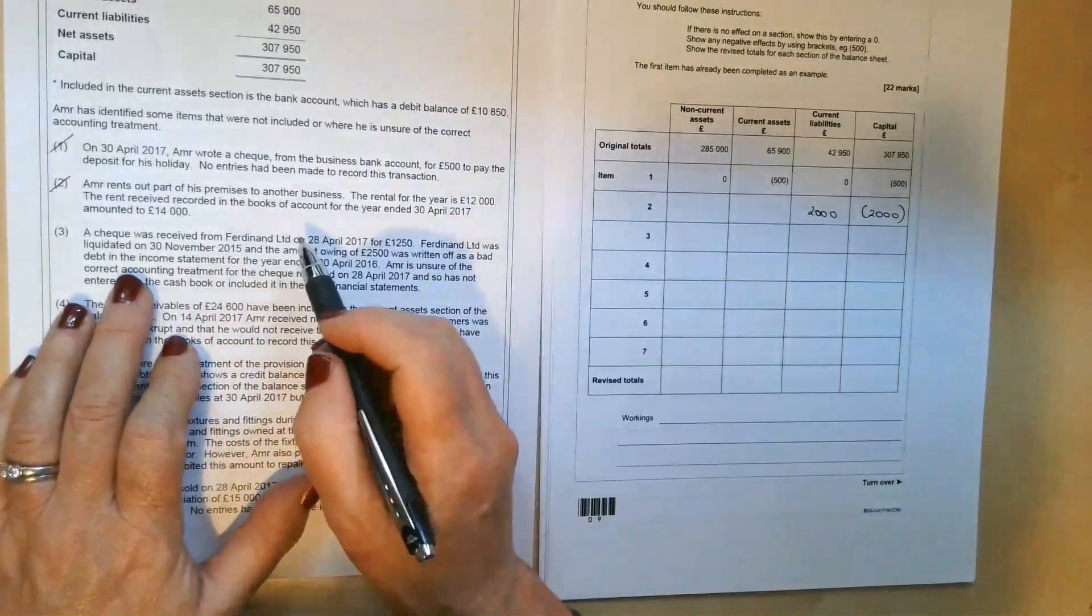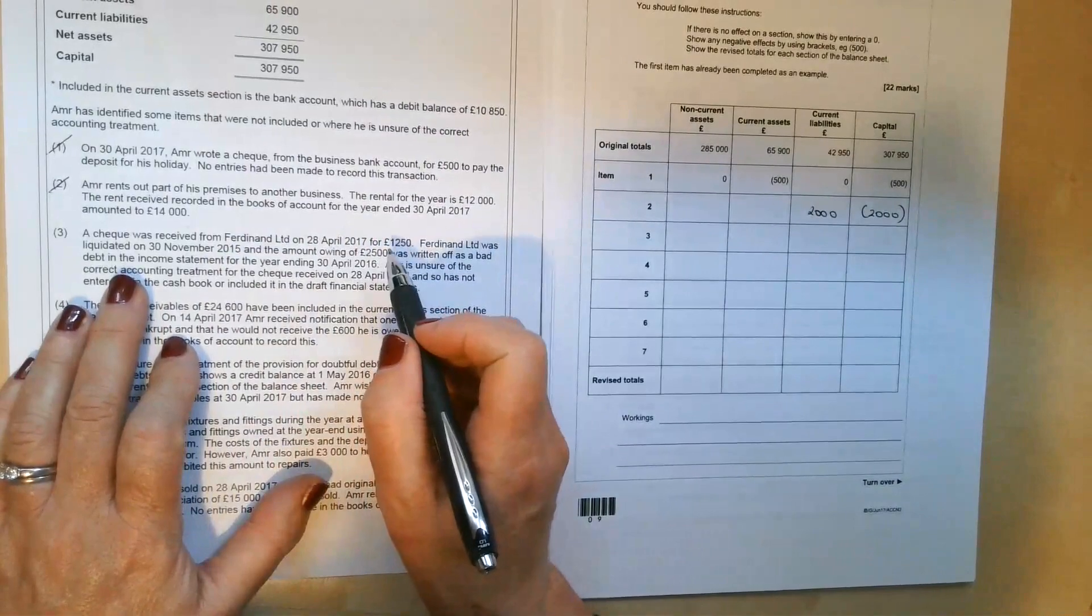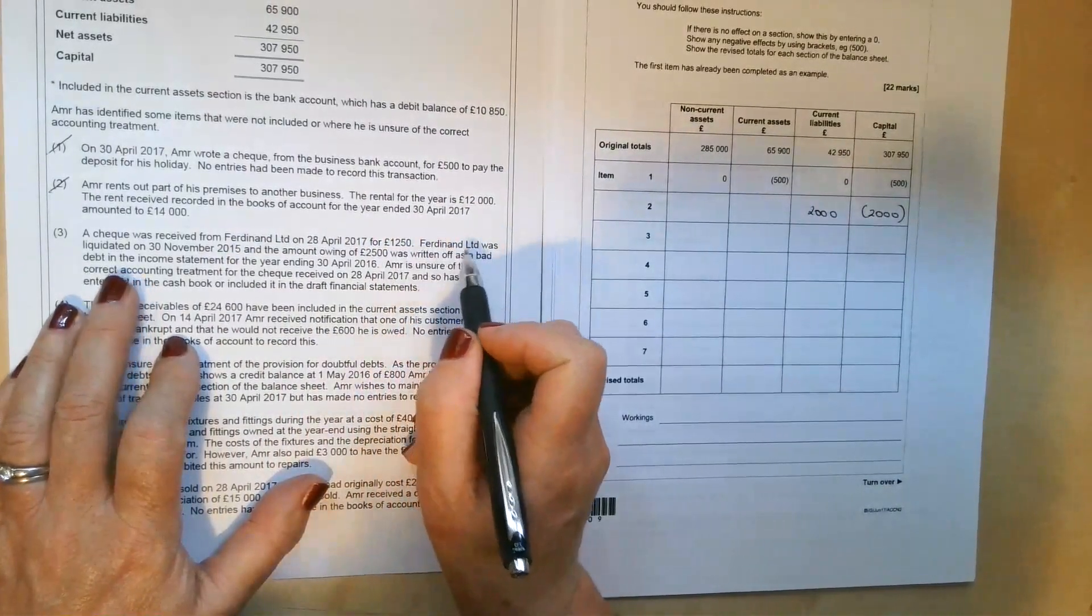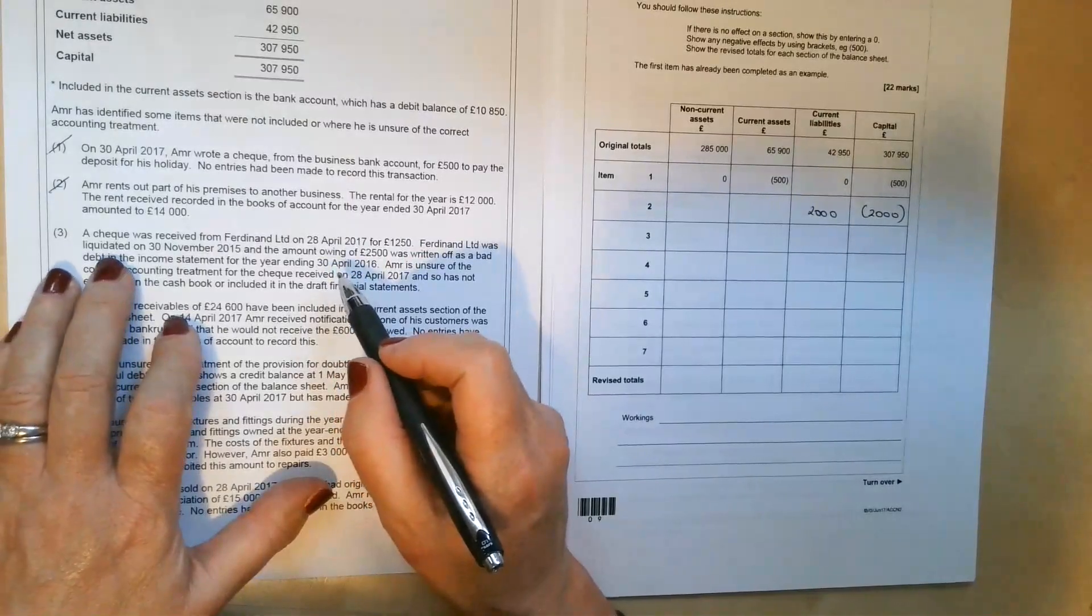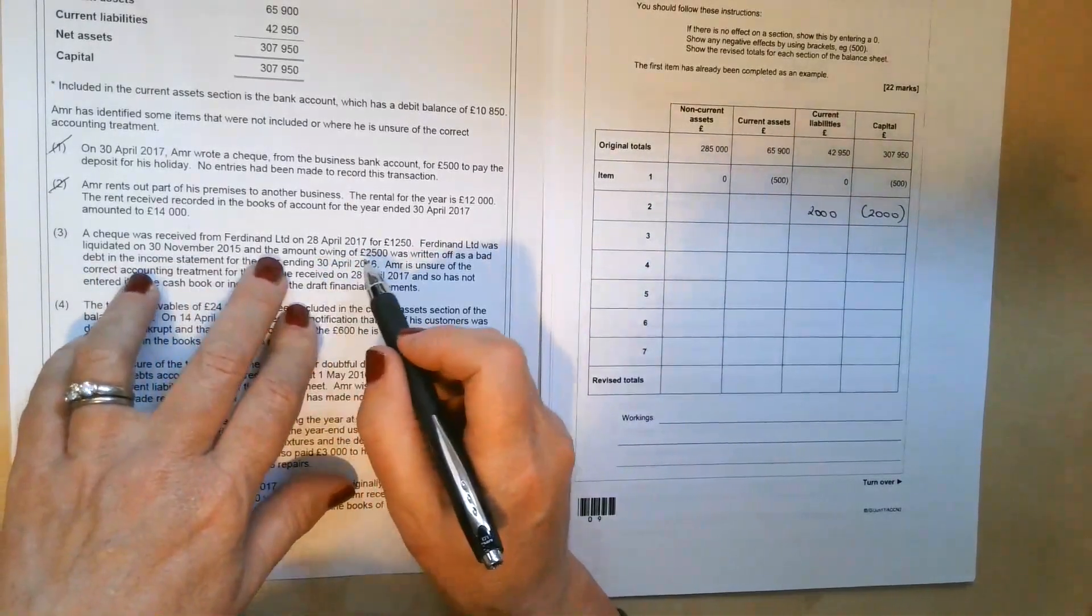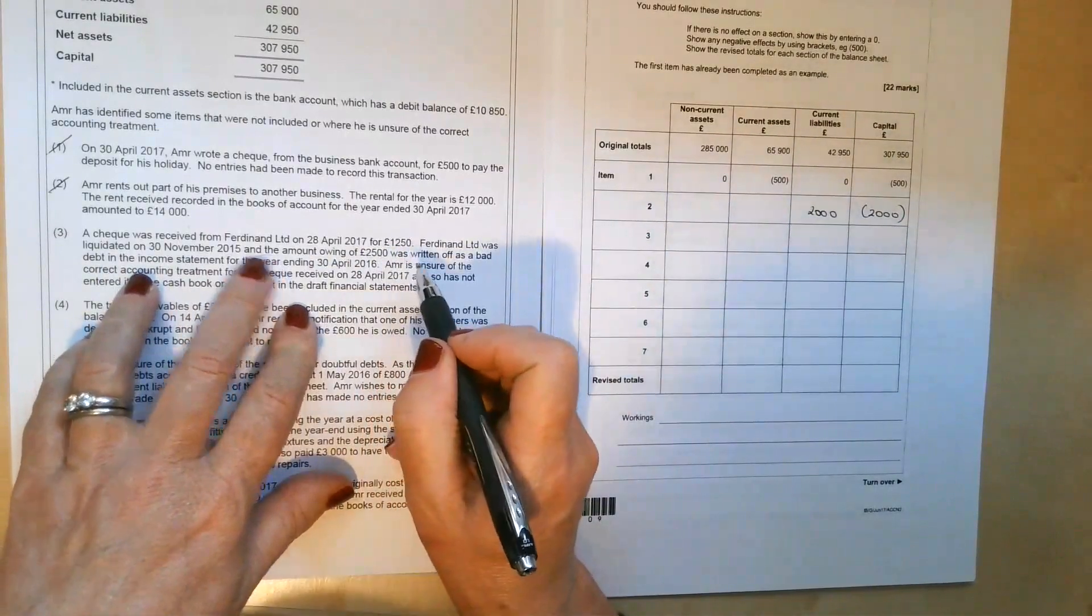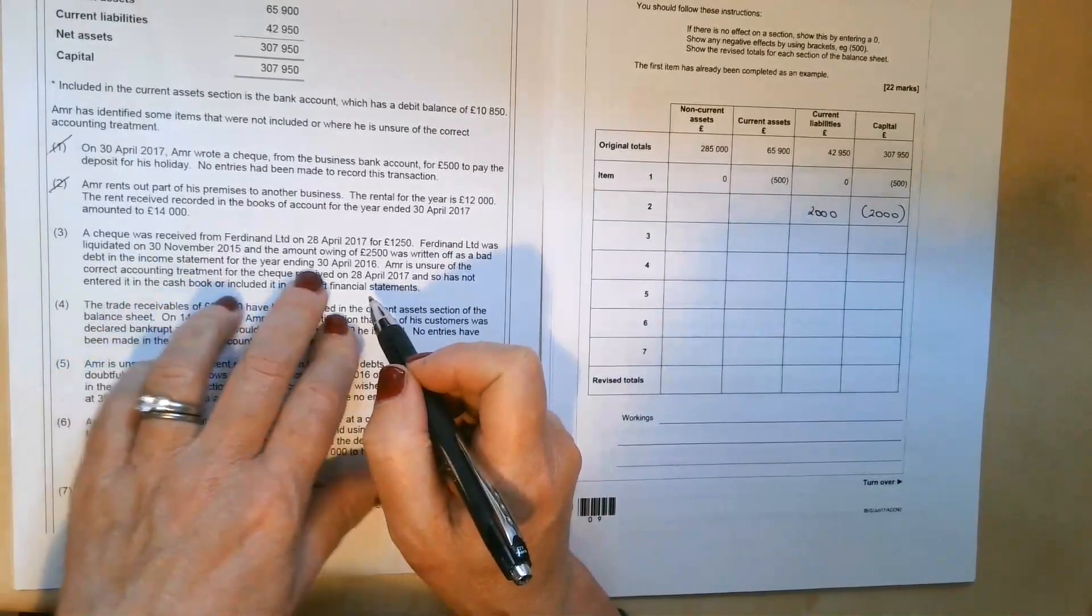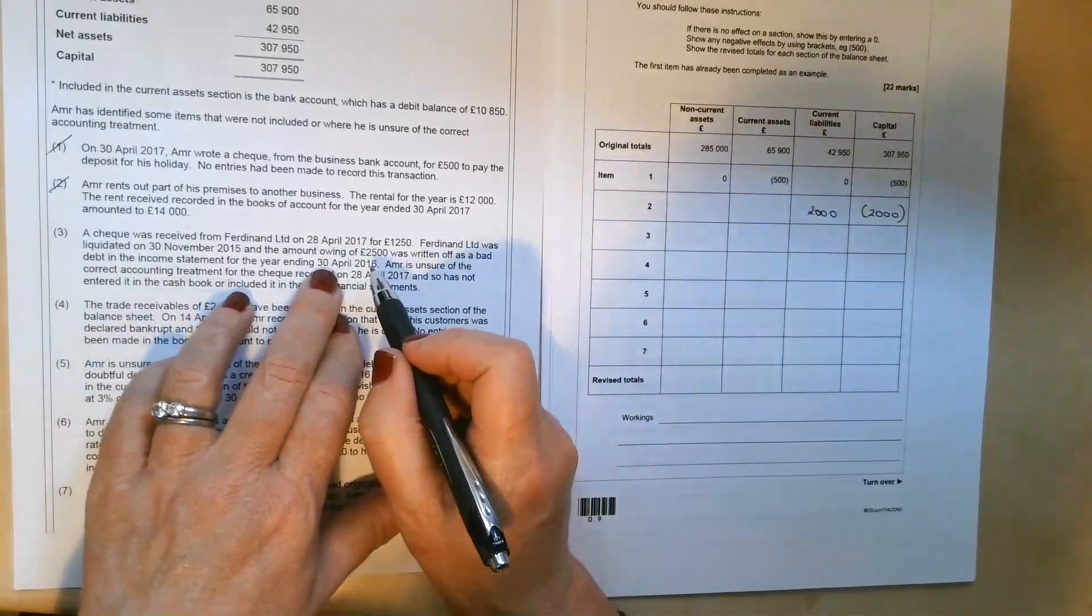Then we've got number three, a cheque received from Ferdinand Limited on the 28th of April 2017 for £1,250. Ferdinand Limited was liquidated. So that means it went into receivership on the 30th of November 2015. And the amount owing of £2,500 was written off as a bad or irrecoverable debt in the income statement for the year ending 30th of April 2016.